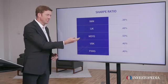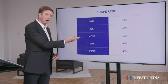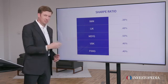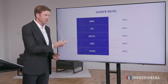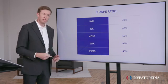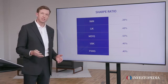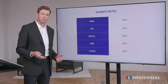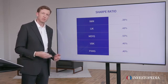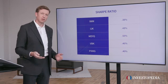As you can see, MDYG, which tracks a similar pool of stocks, turned out to be the winner over a 10-year period. So this is a 10-year Sharpe ratio, which is a more fair comparison.